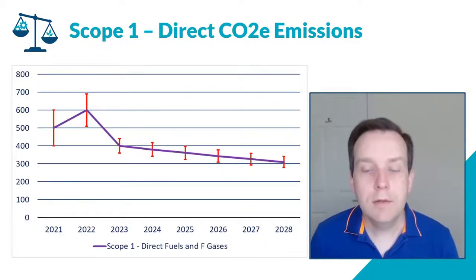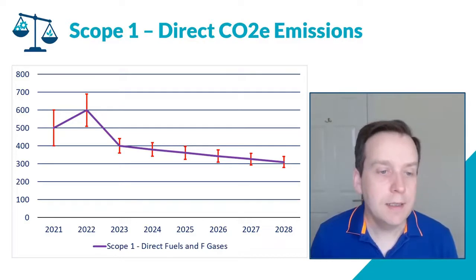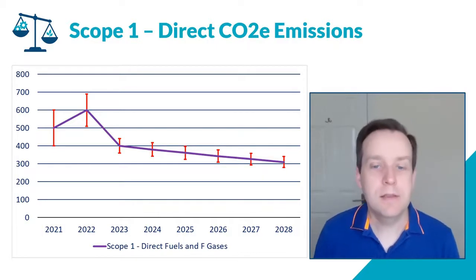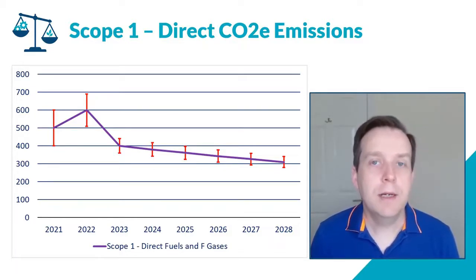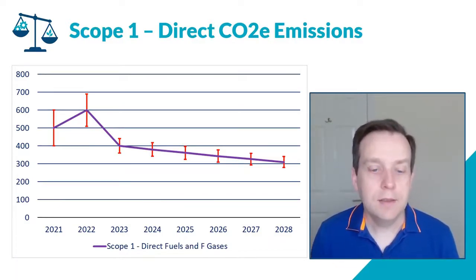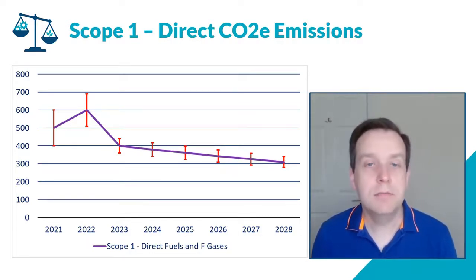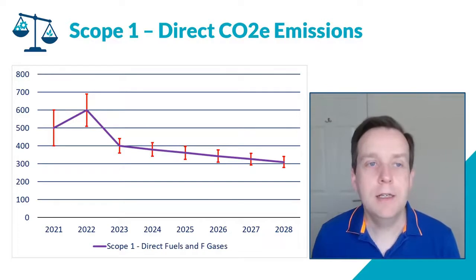If we take a hypothetical curve of tracking your scope one emissions, what I have here is a purple line showing the calculated value by a business each year, with error bars shown as well. This is as much about how you collect the data as the accuracy of the data. For most businesses, scope one covers fuels — diesel, natural gas, F-gases — all of which should be readily measurable.